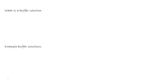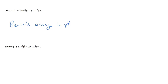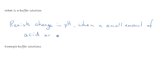First up, we're going to see what a buffer solution is and some example buffer solutions. A buffer solution is a solution that resists change in pH — it doesn't actually stop change, but it resists change in pH when a small amount of acid or alkali is added.